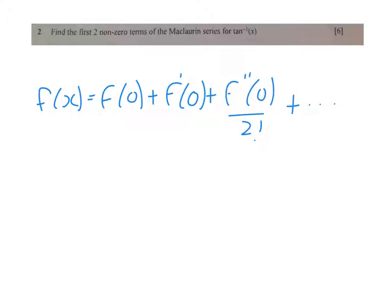So if we want our first one, we want to know tan^(-1)(0) and that is 0.